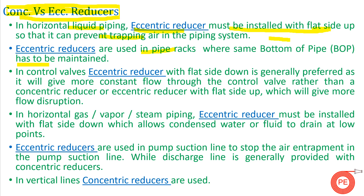Eccentric reducers are used in pipe racks where the bottom of pipe elevation has to be maintained. Because eccentric reducers have one flat side, that flat side can be matched with the parent pipe so the bottom of pipe remains at the same level. In control valves, eccentric reducers with flat side down are generally preferred as this gives more constant flow to the control valve rather than causing flow disruption.